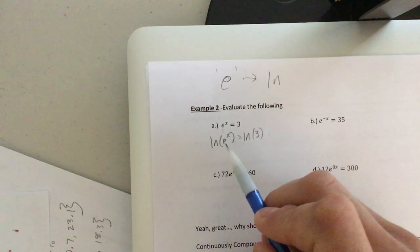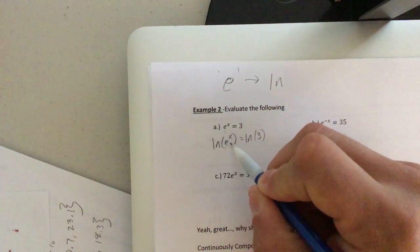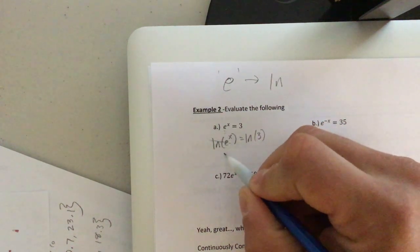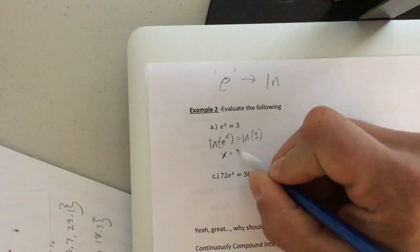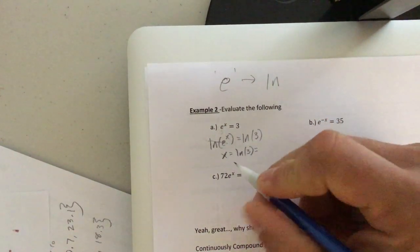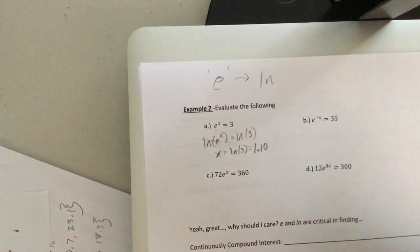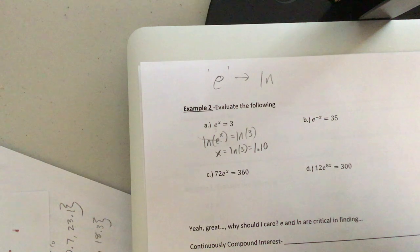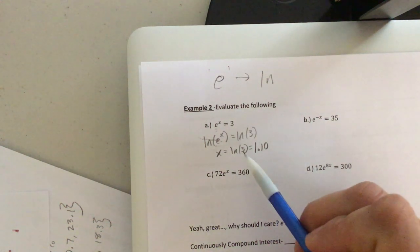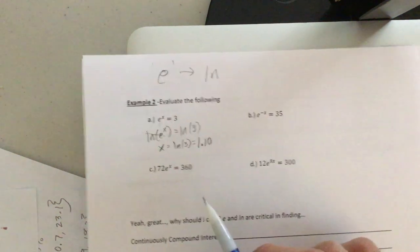All right. The natural log and the E, they are inverses. That means that they're going to cancel out. Over here, we're left with X equals the natural log of three. Or when you type that in your calculator, you get approximately 1.10. Okay. And if you're saying, Mr., how do you type that in? You press three and then you hit natural log if you're using your cell phone calculator.